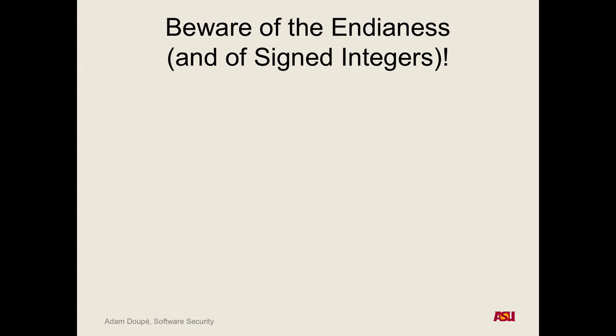Another incredibly important concept: endianness — how you specify something in memory. Which side has the most significant byte? Intel uses little-endian ordering, which seems counterintuitive. So if you have the number at memory address 0x00F67B40 with bytes 0, 1, 2, 3 at consecutive addresses, in little-endian the most significant byte is at the highest address.